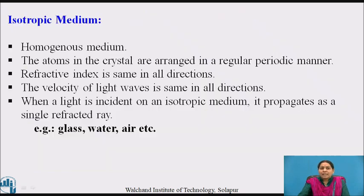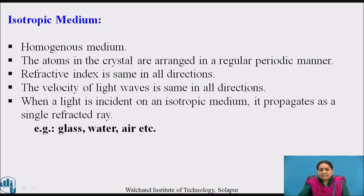Now let us see in detail what is isotropic and anisotropic medium. An isotropic medium is a homogeneous medium. The atoms in the crystal are arranged in a regular periodic manner. The refractive index is the same in all directions, and the velocity of light waves is the same in all directions. When light is incident on an isotropic medium, it propagates as a single refracted wave. Glass, water, and air are examples of an isotropic medium.